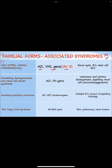The next familial syndrome is hereditary leiomyomatosis and renal cell cancer syndrome. It is autosomal dominant with a mutated fumarate hydratase gene, and consists of cutaneous leiomyomas, uterine leiomyomas, and associated papillary renal cell carcinoma. Another syndrome associated with papillary carcinoma is hereditary papillary carcinoma, which is autosomal dominant and associated with activating mutations in the MET proto-oncogene, showing multiple bilateral papillary carcinomas in the kidney.